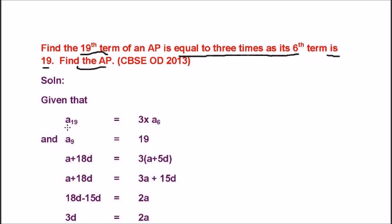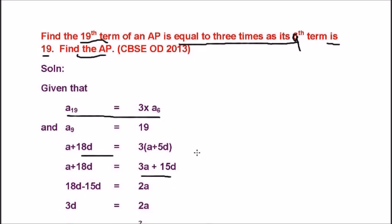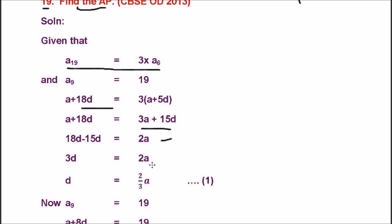So, here, given that A19 is equal to three into A9, that is, 19th term of an AP is equal to three times of its 9th term. A+18D, that is, is equal to 3(A+5D), that is, A+18D is equal to 3A+15D. 18D minus 15D is equal to 2A. So, 3D is equal to 2A, that is, D is equal to 2/3 A. So, mark it as equation 1.